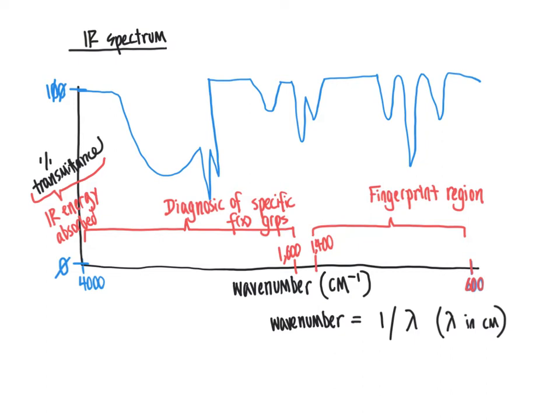Well, fortunately, there are tables of empirically determined values that correspond to different functional groups, such as table 12.2 from your textbook and also available in the package of handout information that corresponds to this IR module. So we're going to take a look at that.